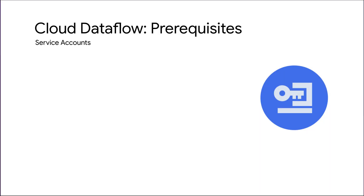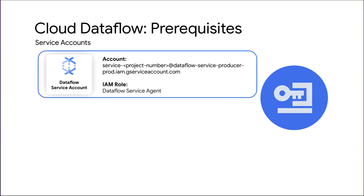Before diving into troubleshooting permission errors with Cloud Dataflow jobs, let's look at service accounts and IAM roles and permissions required to run Dataflow jobs. To run the pipeline, Dataflow uses two service accounts to manage security and permissions. The Dataflow service account is used by the Dataflow service during job creation and execution to check project quota and to create worker instances on your behalf. It will be specific to your project.